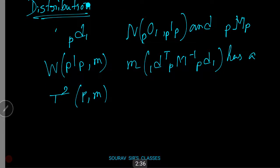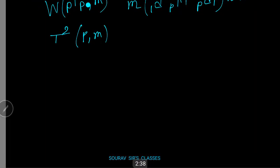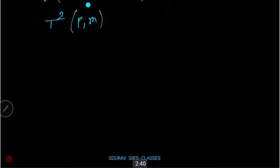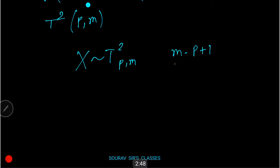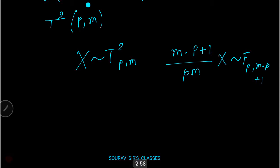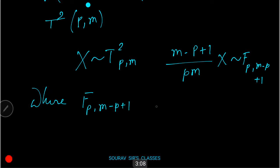If random variable X has a Hotelling T-squared distribution T²(p, m), then (m − p + 1) / (pm) · X follows an F-distribution with parameters p and m − p + 1.